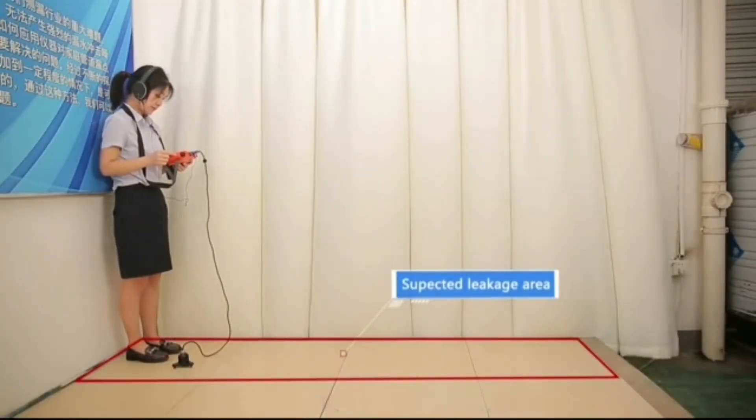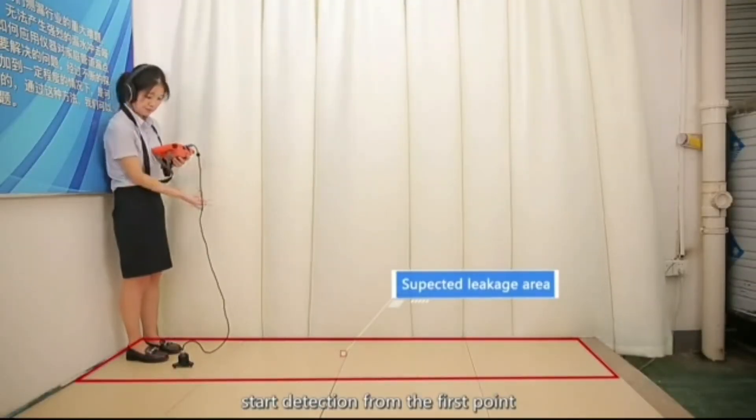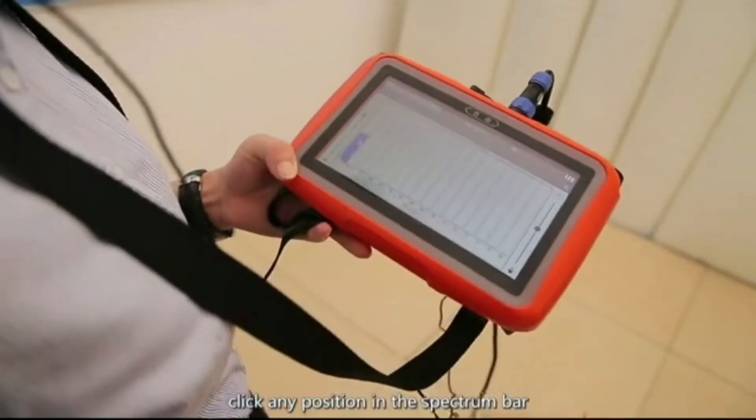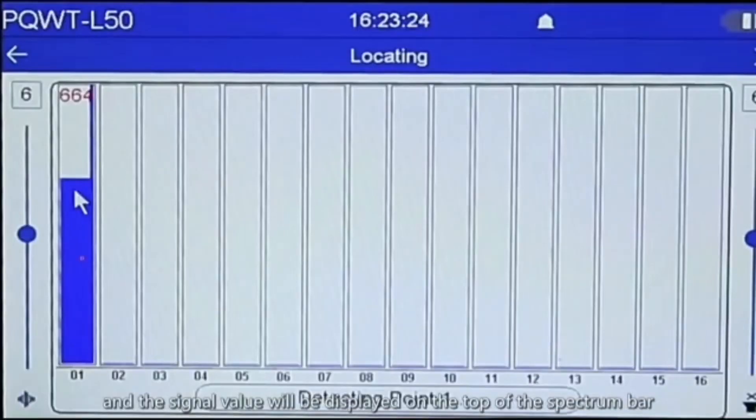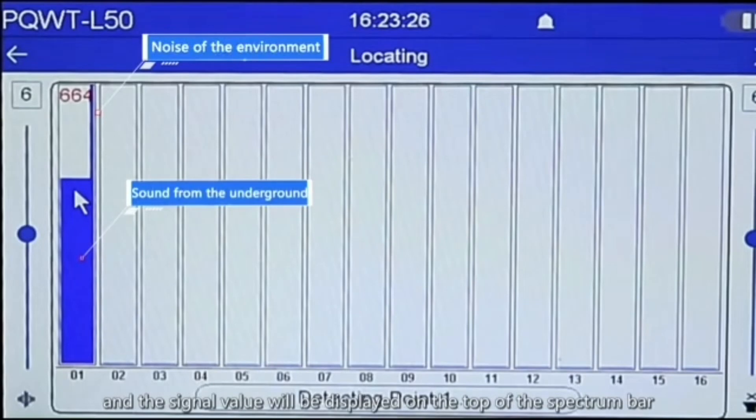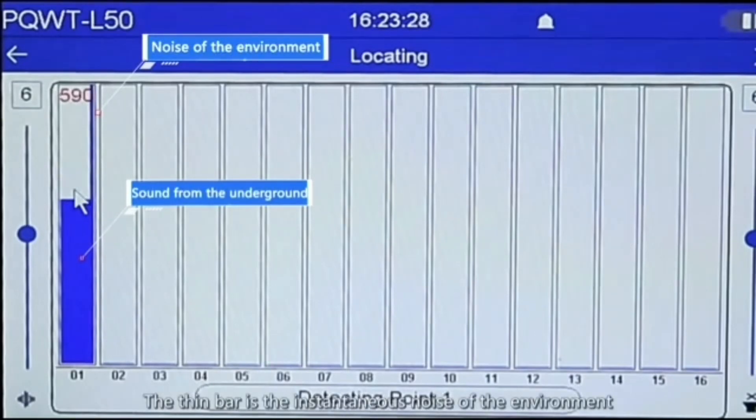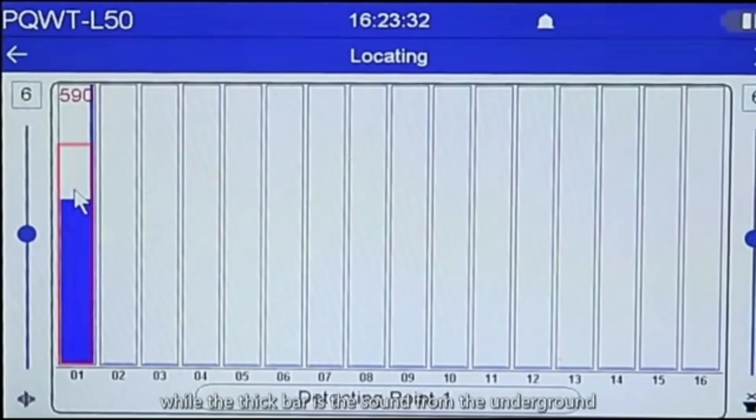Click any position in the spectrum bar, and the signal value will be displayed on the top of the spectrum bar. The thin bar is the instantaneous noise of the environment, while the thick bar is the sound from the underground. We mainly observe the thick bar signal.